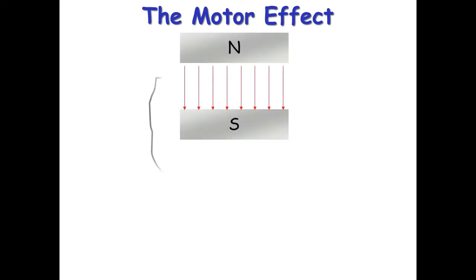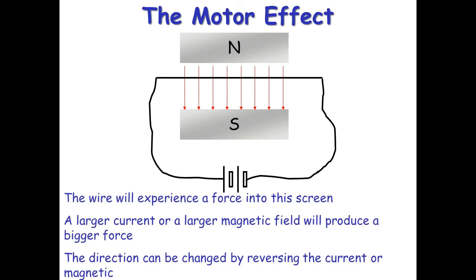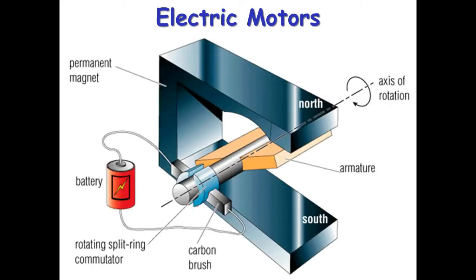The motor effect: if you have a magnetic field from a permanent magnet and a current-carrying wire connected to a power source, a force is produced. The magnetic field and current must be at angles to each other — if they are parallel, no force results. An electric motor uses coils of wire; more coils means more force. One side of the coil experiences a force upward, the other downward, creating a turning effect. More powerful motors use more coils, a larger current, and a larger magnetic field.